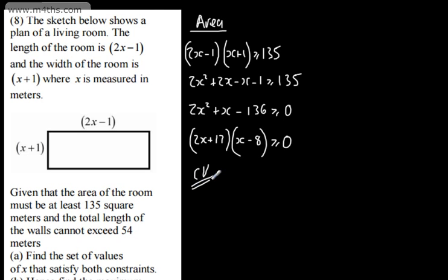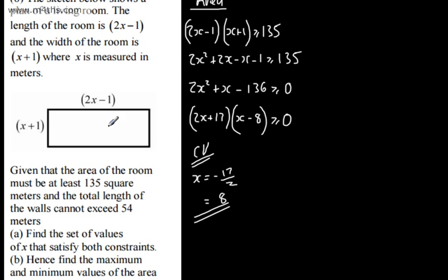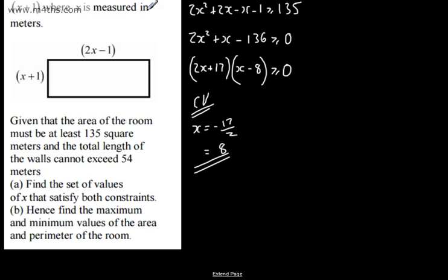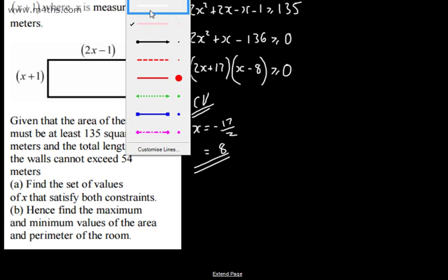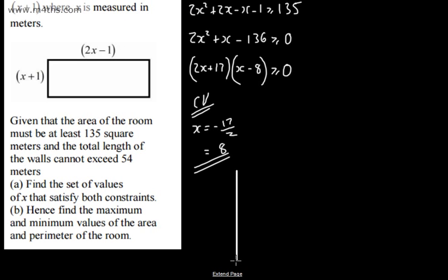Critical values here, we can say that x is going to be equal to negative 17 over 2, and then we've got positive 8. Quite clearly, x can't have this value of negative 17 over 2. We can't have that value being negative because these are lengths.